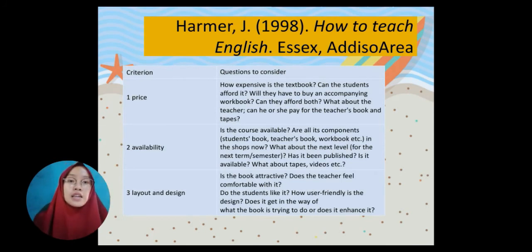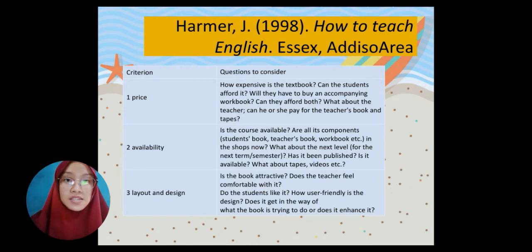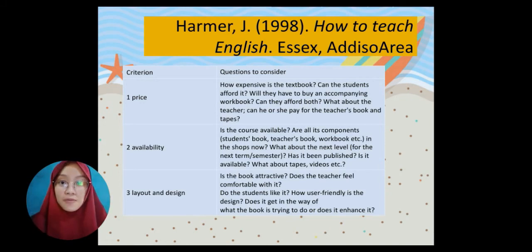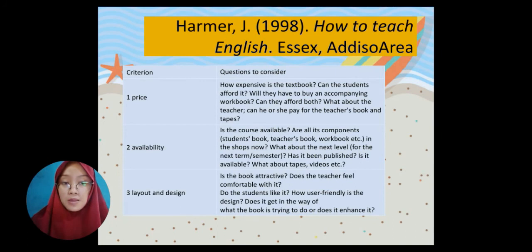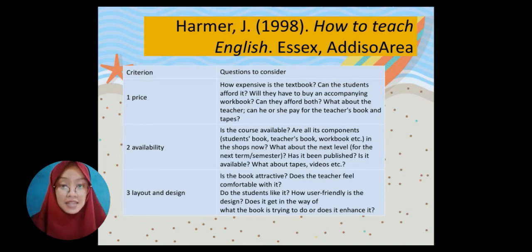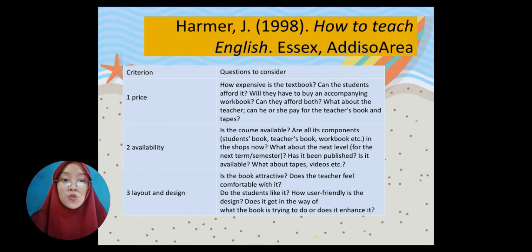According to Harmer in 1998 in his book 'How to Teach English,' the first criterion is price. Questions to consider include: how expensive is the textbook, and can the student afford it? The second is availability: is the course available in shops now, or has it been published, and what about supplementary materials like tapes, videos, and extras? The third is layout and design: is the book attractive, does the teacher feel comfortable with it, do students like it, does it get in the way of what the book is trying to do, or does it enhance it?